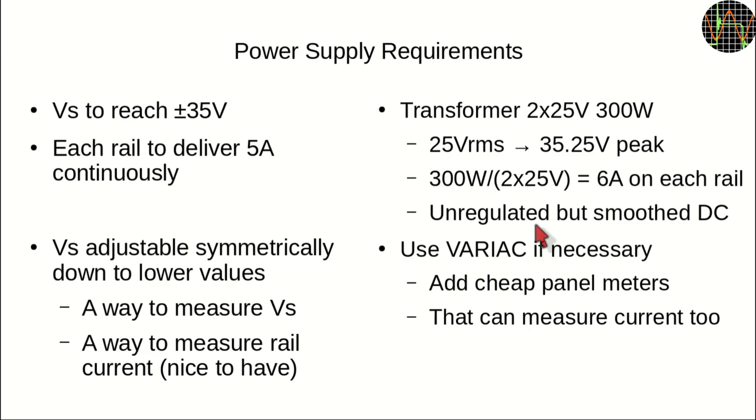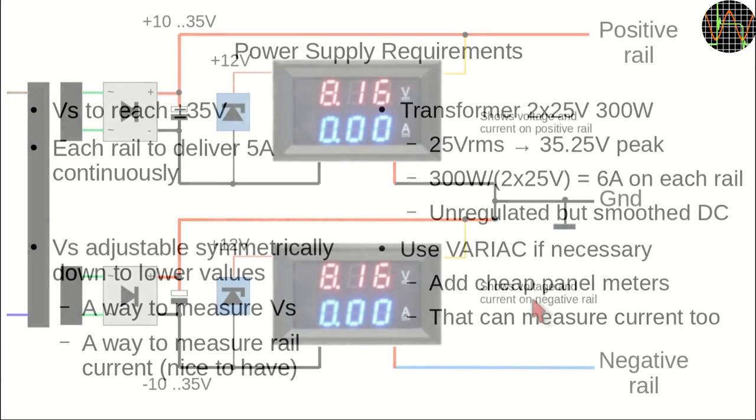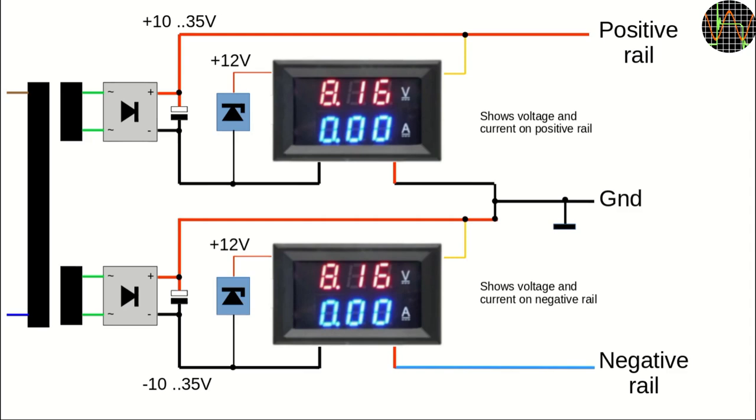As for the meters, I decided cheap panel meters that measure volts and current are ubiquitous on eBay so why not add one for each rail? I made a whole video about these panel meters, link in the description, so I won't go into details here. The issue with using these meters is the way they measure current on the negative rail which forces you to use this strange looking wiring to measure the current and voltage of the negative rail.